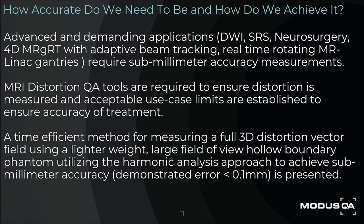How accurate do we need to be and how to achieve it? Advanced and demanding applications such as diffusion-weighted imaging, stereotactic radiosurgery, neurosurgery, and 4D MR-guided radiation therapy with adaptive beam tracking with real-time rotating MR-Linac entries require sub-millimeter accuracy measurements. MRI distortion QA tools are required to ensure distortion is measured and acceptable use case limits are established to ensure accuracy of treatment. A time-efficient method for measuring a full 3D distortion vector field using a lightweight, large field-of-view, hollow boundary phantom utilizing the harmonic analysis approach to achieve sub-millimeter accuracy is presented.